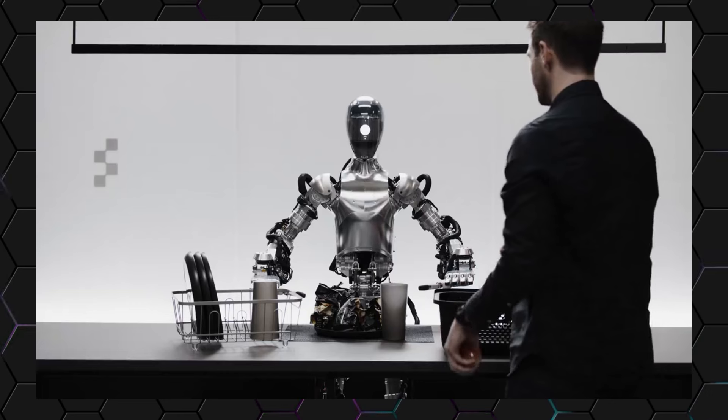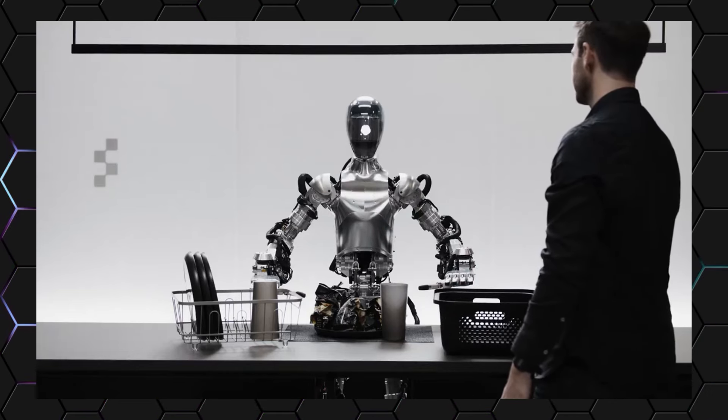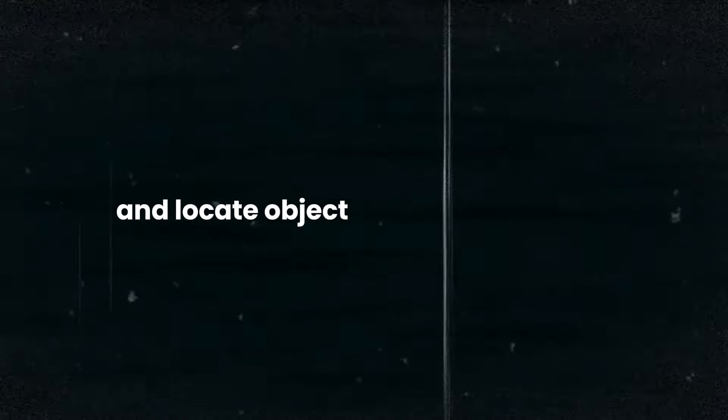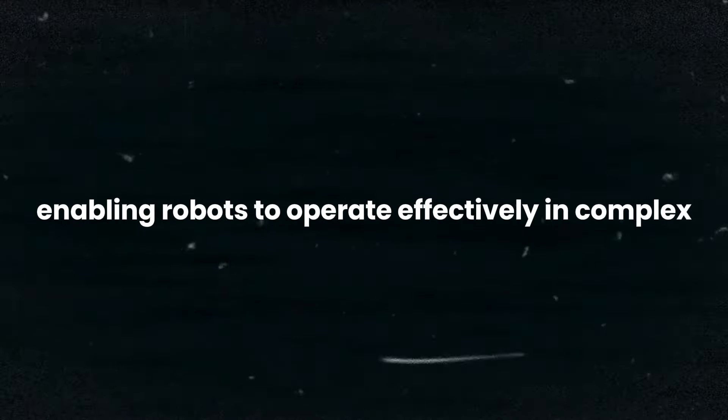Using its advanced vision system, the robot can perceive and analyze its surroundings with astonishing accuracy. When asked to describe what it sees, the robot responds with clarity and precision. This ability to recognize and locate objects in its environment is a monumental leap forward in enabling robots to operate effectively in complex real-world settings.